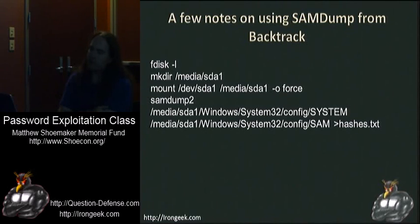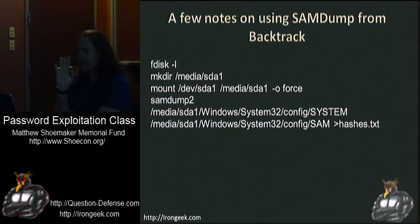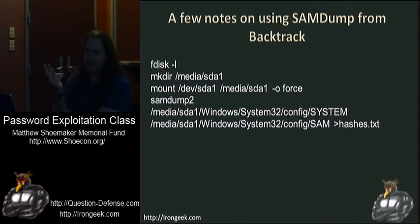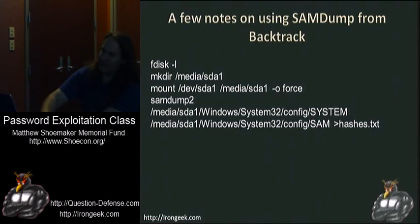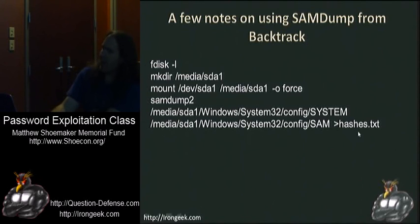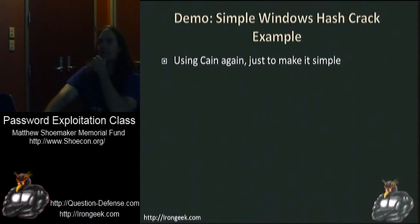If you were to dump stuff from the SAM file using Backtrack, here's a series of commands you'd use — no need to write these down, the slides will be out there. You find which disk is your NTFS partition, make a directory to mount it in, mount it using force in case it was dismounted uncleanly, then run SAMdump2 pointing to the system hive to extract the SysKey and to the SAM file to pull the password hashes, and pipe it into hashes.txt. Instead, I'm just going to use Cain because I'm incredibly lazy.